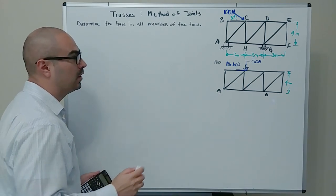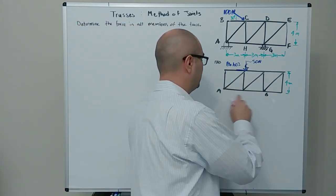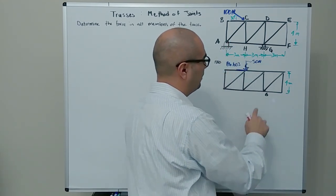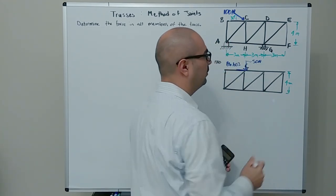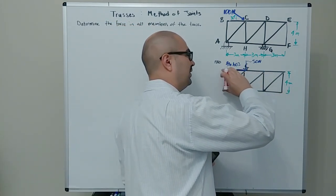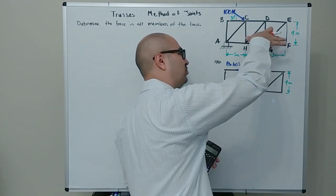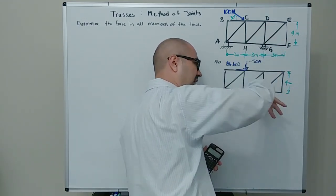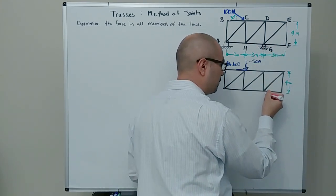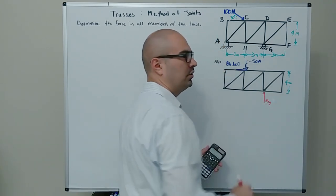Next we put the reaction forces. At point A there's a pin connection; at G there's a roller. With the roller, the truss can translate along the x axis and can be lifted, but it can't be driven into the ground — the roller resists with a vertical force we'll call Gy.